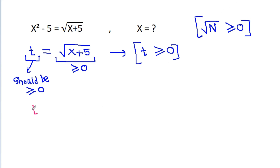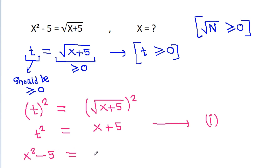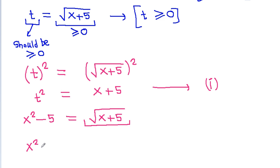We have t is equal to the square root of x plus 5. If we square both sides, then t squared will be equal to x plus 5 — call this equation 1. We also have x squared minus 5 is equal to the square root of x plus 5, which equals t. So x squared minus 5 is equal to t.